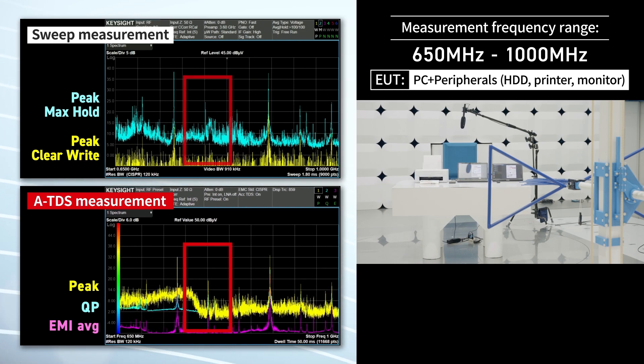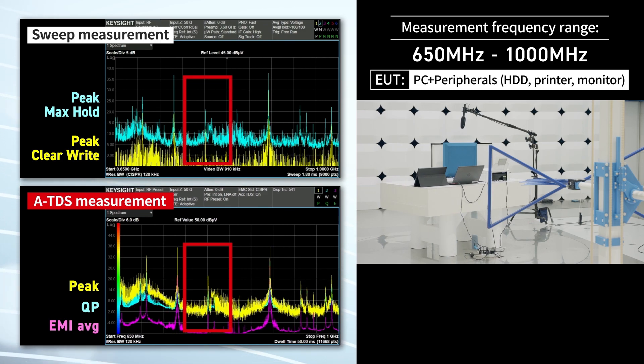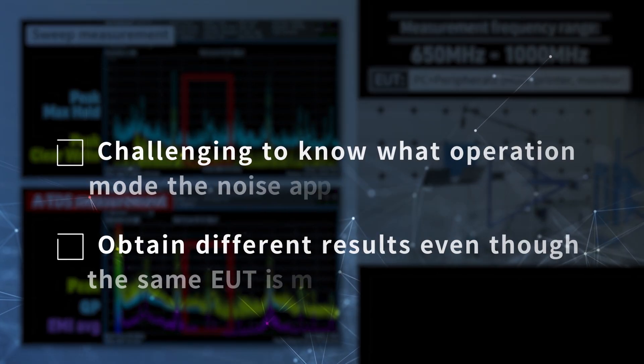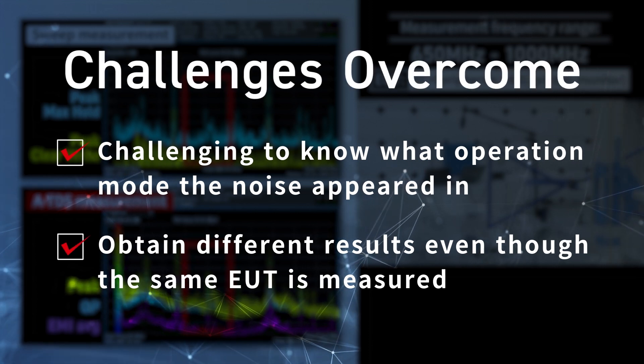With traditional sweep measurement methods, this behavior is never observed. You can correctly select and evaluate the noise for formal measurements using the ATDS feature.